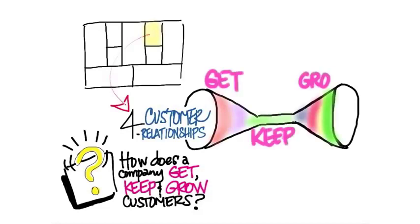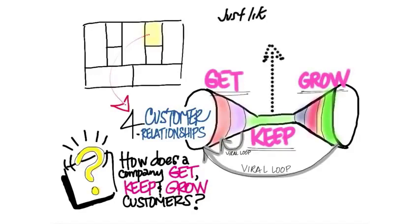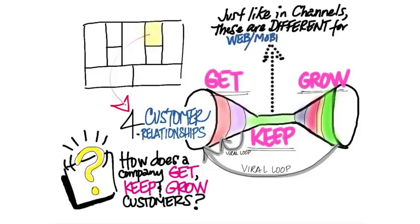Customer relationships are very different for web/mobile than for physical channels, but visually they look like a double-sided funnel. For a web example: getting customers means worrying about how to acquire them — how do I get them to my website? How do I activate them — make them do something? Then, how do I keep them around without losing them through attrition and churn? And what can I do with existing customers to make them spend more or use the product even more? You might have hypotheses on day one, but you'll only figure this out when you're out of the building.